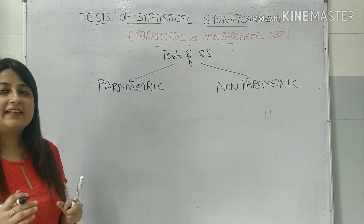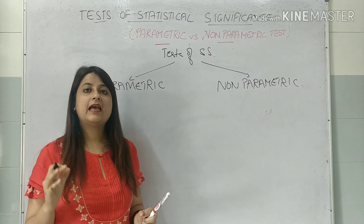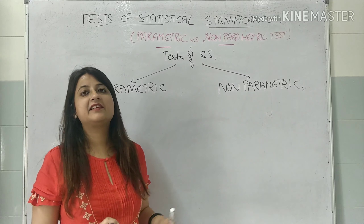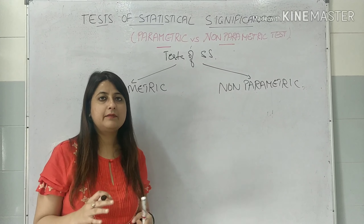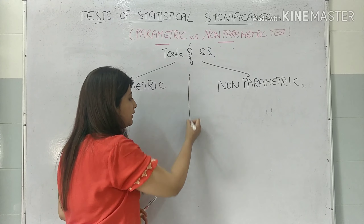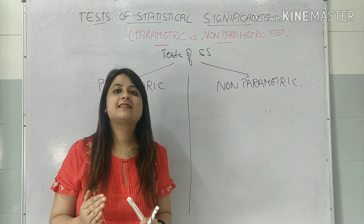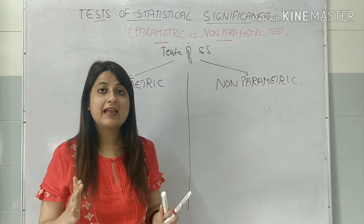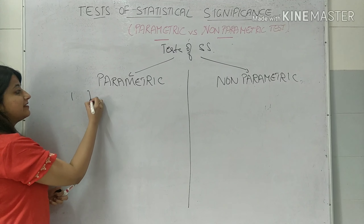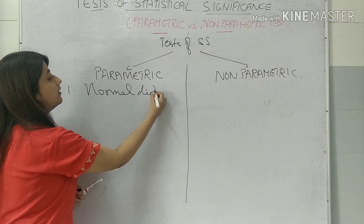Whenever you get an MCQ, you get a situation and you will be asked which test would you apply. So if you understand the difference between the two, it will be very easy for you to solve the question. Parametric statistical tests are tests which are applied in a normal distribution. So the first difference is that parametric tests are applied when the distribution is normal.